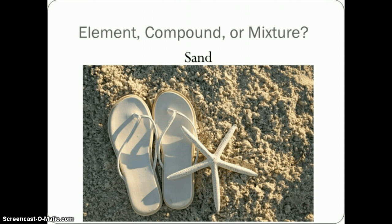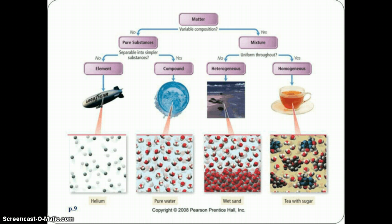Sand — is it an element, a compound, or a mixture? This is a tough one. You were correct if you said it was a mixture. So under your elements category you have five things, under your compounds you have three, and under your mixtures you have six.